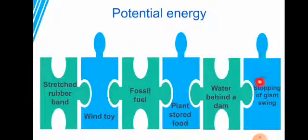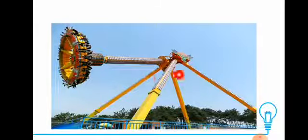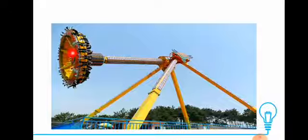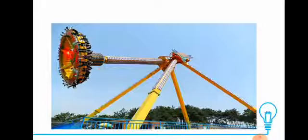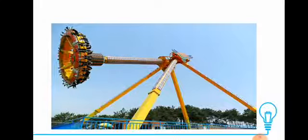The sixth example is the top of a giant swing. When you ride this swing and it goes very high, it stops for a moment. At that moment, the swing has stored energy — it has potential energy.